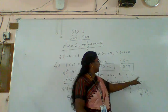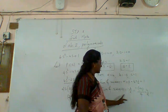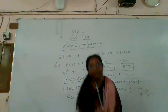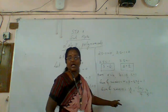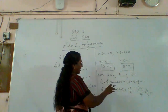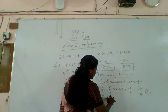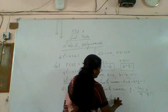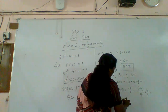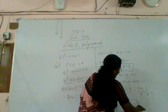Both the answers are the same. Therefore sum of zeros is equal to minus b by a — verified.